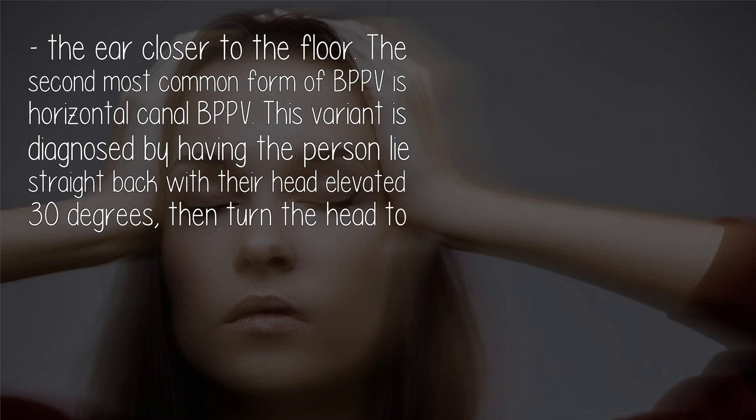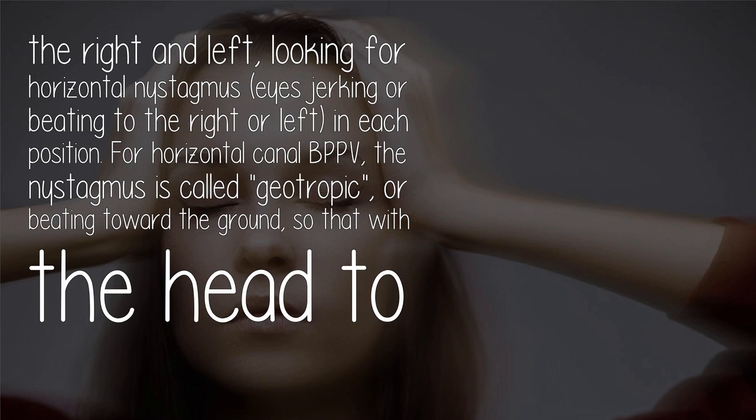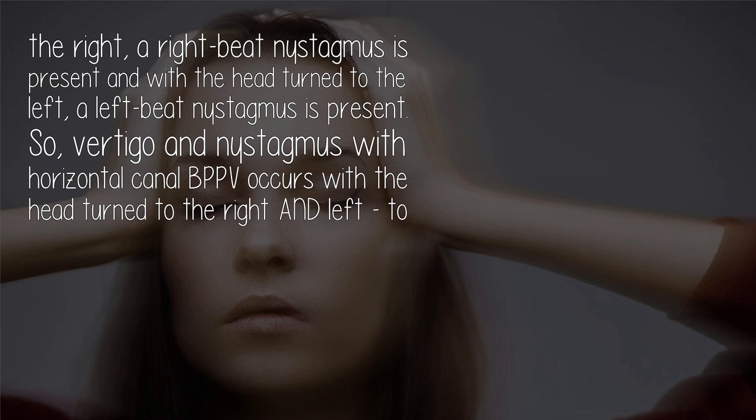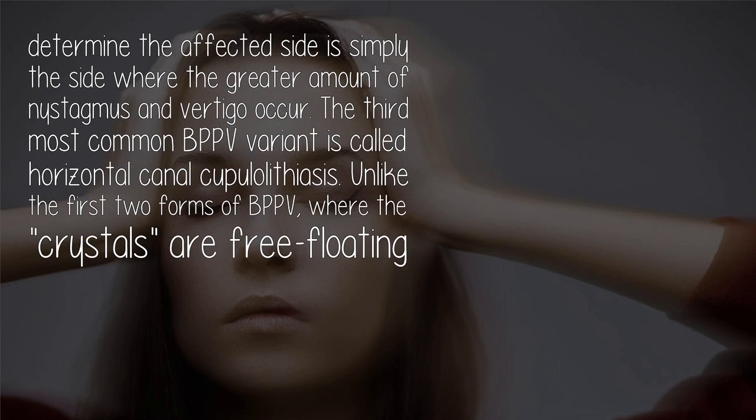The second most common form of BPPV is horizontal canal BPPV. This variant is diagnosed by having the person lie straight back with their head elevated 30 degrees, then turning the head to the right and left, looking for horizontal nystagmus in each position. For horizontal canal BPPV, the nystagmus is geotropic, or beating toward the ground — right-beat nystagmus with the head right, and left-beat nystagmus with the head left. The affected side is simply the side where the greater amount of nystagmus and vertigo occur.